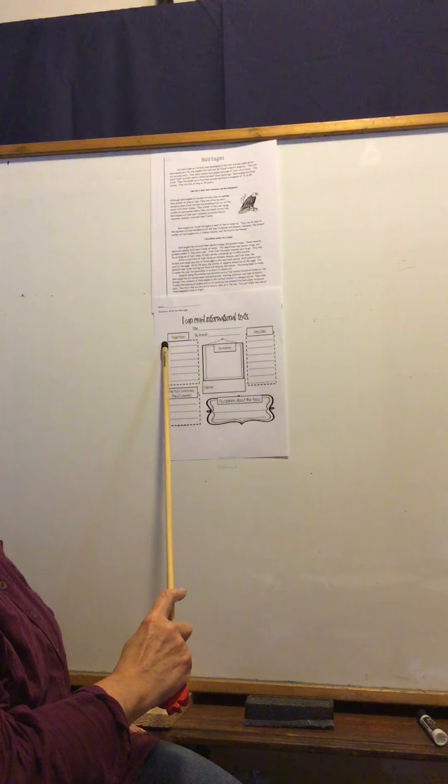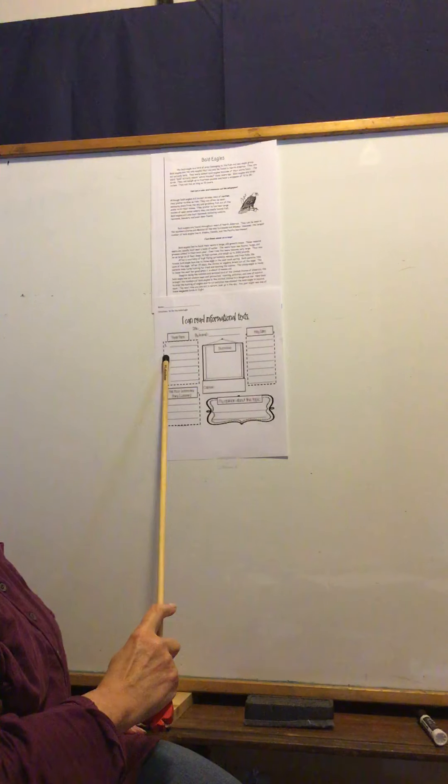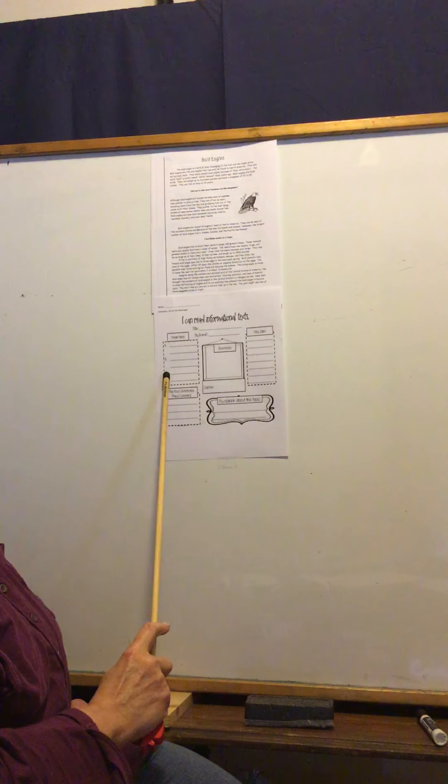One, tell me something about them. Two, tell me another thing about them. Three, tell me another thing about them. Remember to begin with a capital, finger space, period at the end.